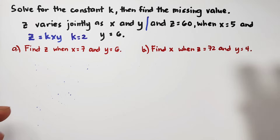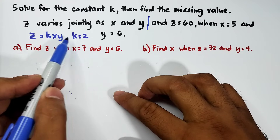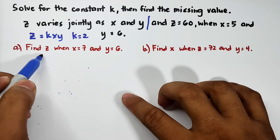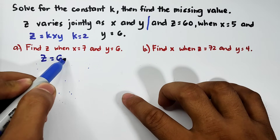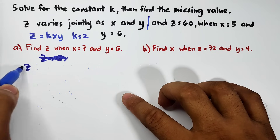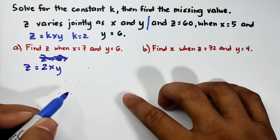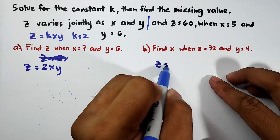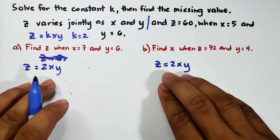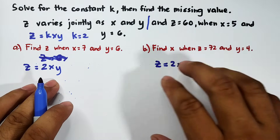Since you already determined the value of k, substitute this constant into the general formula, and it becomes z is equal to 2xy. This is the equation we will use within the problems.